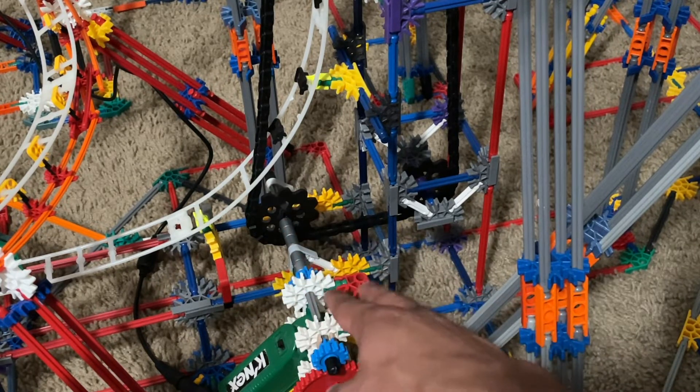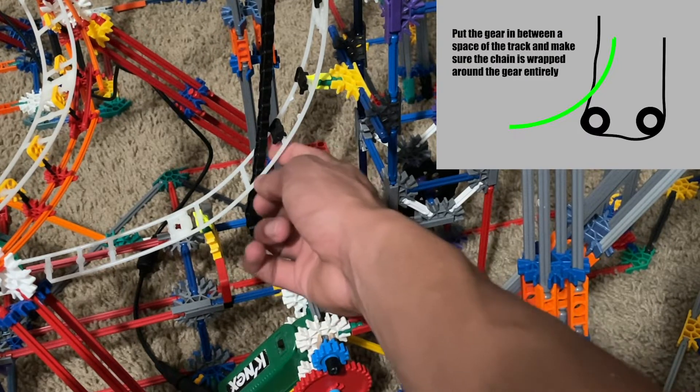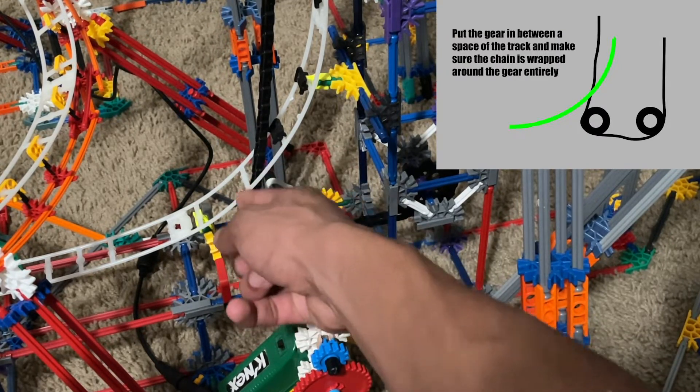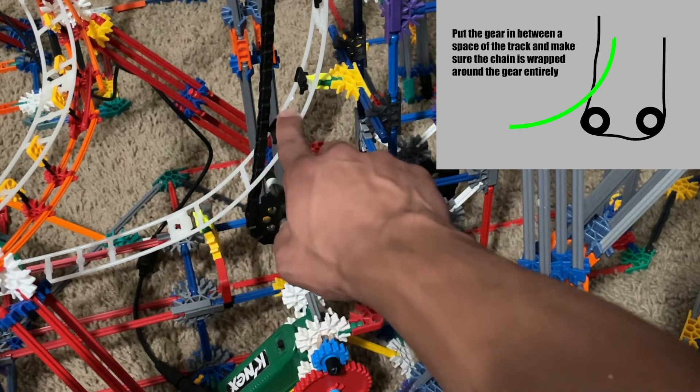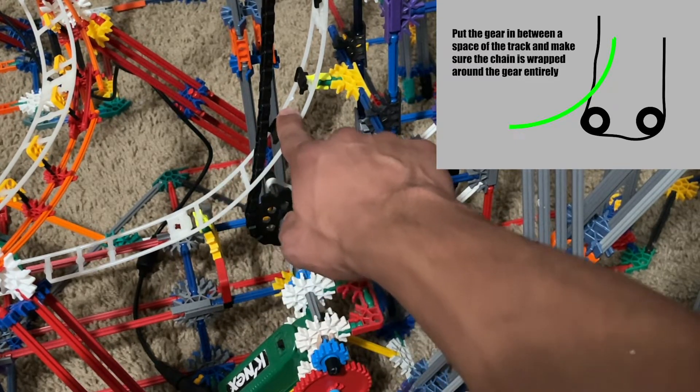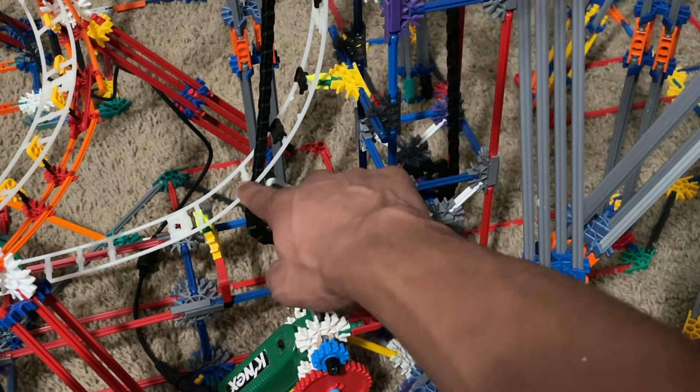You want to make sure you position the gear. I'm going to show an example image right here: you need to place the gear right under a slot of the track that way the chain is able to pass through. You don't want the chain going in the slot behind it or too far in front of it because the car won't be able to catch it at that point, and that will just make your lift hill very choppy and not very smooth.